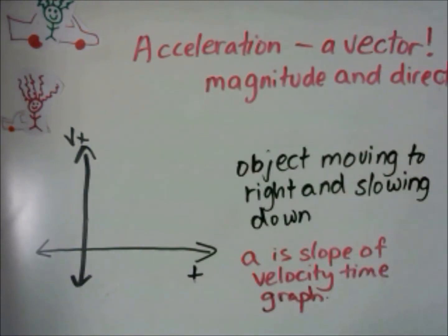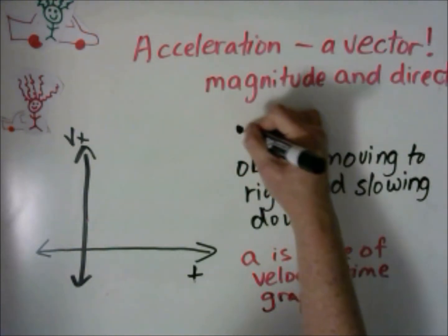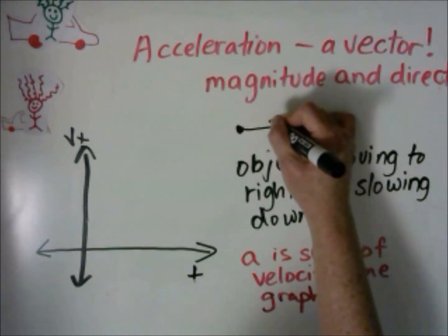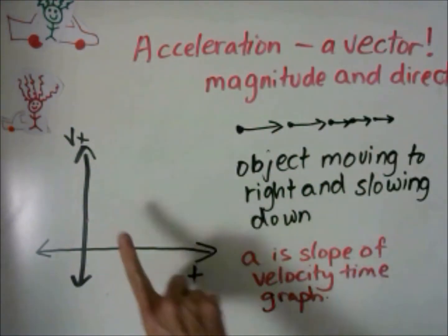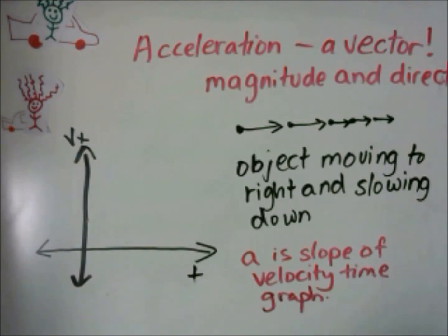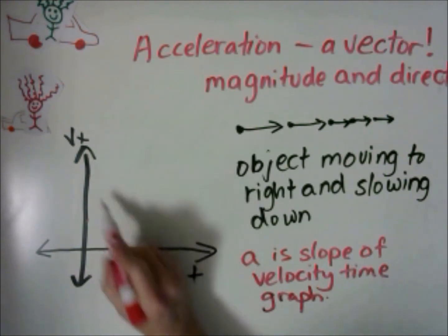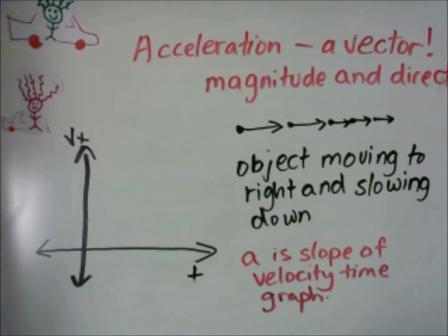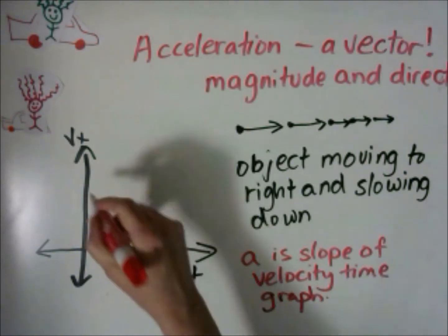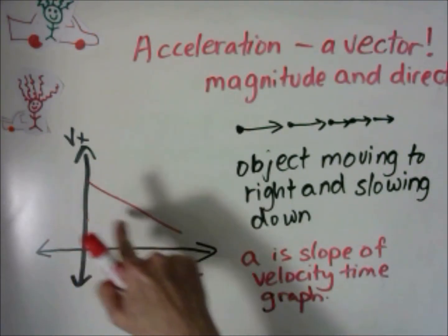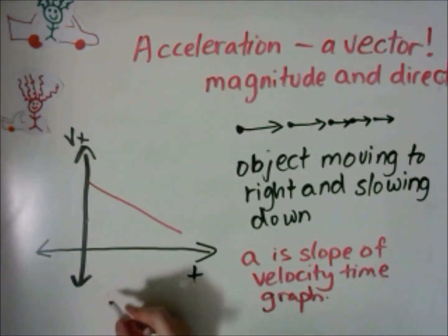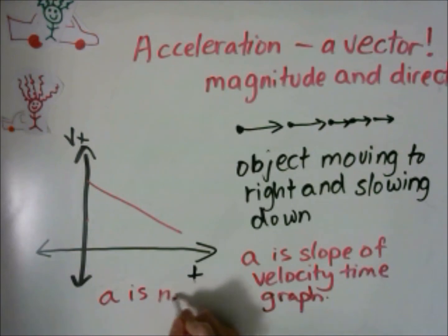Let's consider an object that is moving to the right and slowing down. Its motion diagram looks like this. And if we graphed it on a velocity-time graph, it's moving to the right so it's going to be in the positive velocity. And it's slowing down, so its velocity is decreasing. By looking at the slope of this line, we can see that in this case, acceleration is negative.